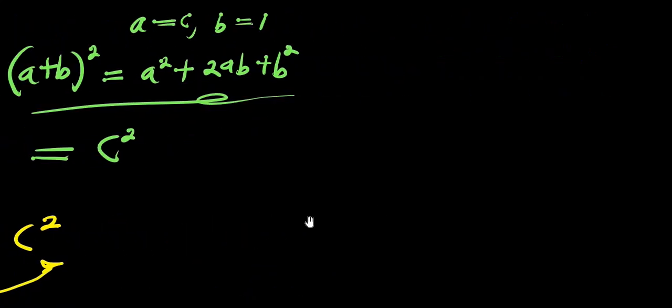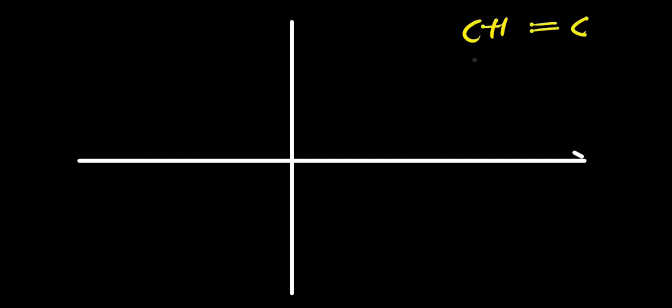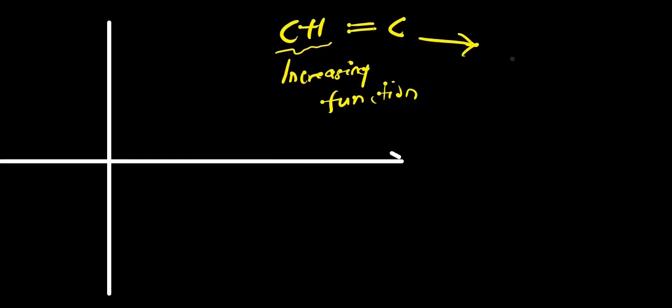What then is the problem? Let's analyze it using a graph. Why is there no solution? We have this graph, and remember the equation: √(c+1) = √c. The function c+1 here is an increasing function, and the function c on the right is also an increasing function.